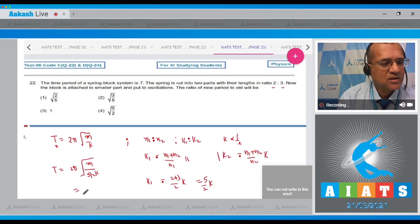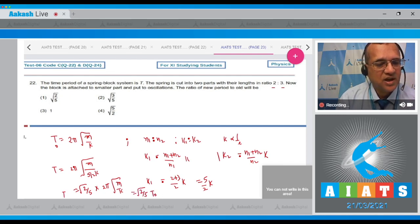So therefore, what will the new time period be? This is equal to 2 pi square root of m by k, and k is 5/2 k. And what do you get? This is square root of 2/5 times 2 pi square root of m by k, and this is the original time period.